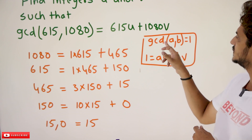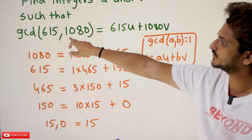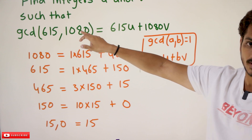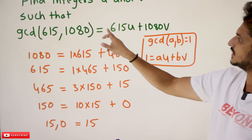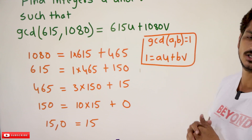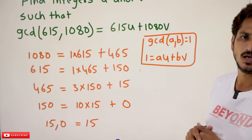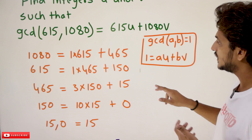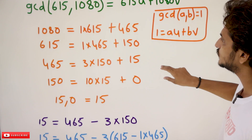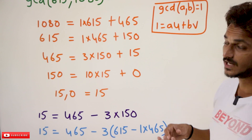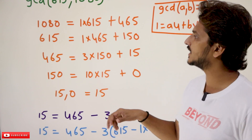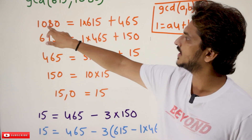So here also, GCD(615, 1080) is whatever the GCD equals 615u + 1080v. The way we need to solve this: first we are going to identify the GCD. How are we going to identify the GCD?